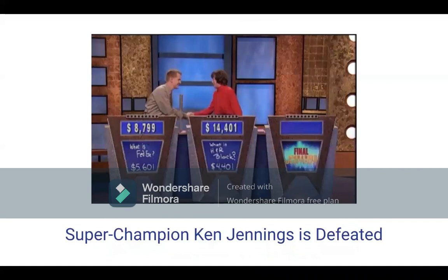Here is a screenshot of a perfect example of wagering strategy. This was Super Champion Ken Jennings' 75th game, where he finally lost to competitor Nancy Zerg, who wagered just enough money to overtake him if he got the question wrong. He did get it wrong, so no matter what he would have wagered he would have lost to her, and her wagering strategy paid off perfectly.